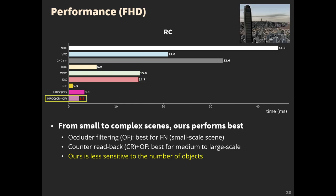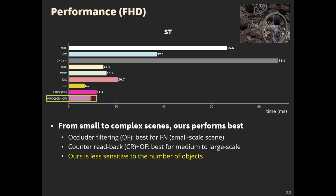In the large scene, our method with counter readback and occluder filtering still performs best. A faster-rotation variant of the scene is used to evaluate dynamic scenarios with faster camera movements. In that variant, our method with counter readback and occluder filtering still performs best, and CHC++, ROC, and ours perform slightly worse than the base scene, but the penalty from lower temporal coherence is not significant.